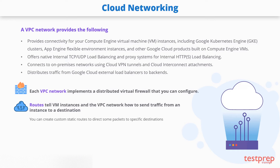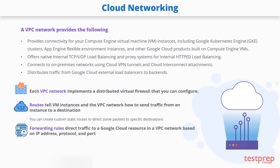You can create custom static routes to direct some packets to specific destinations. While routes govern traffic leaving an instance, forwarding rules direct traffic to a Google Cloud resource in a VPC network based on IP address, protocol, and port. Some forwarding rules direct traffic from outside of Google Cloud to a destination in the network; others direct traffic from inside the network. Destinations for forwarding rules are target instances, load balancer targets, and Cloud VPN gateways.